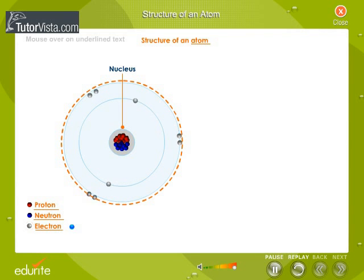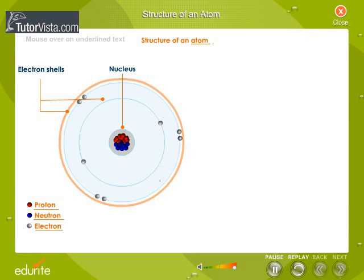The electrons revolve around the nucleus in fixed orbits. These are the electron shells. The space around the nucleus in which the electrons revolve determines the size of the atom.